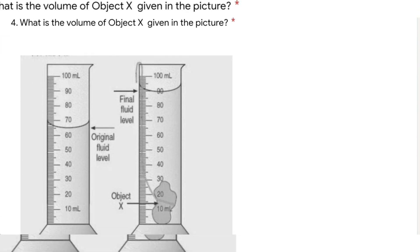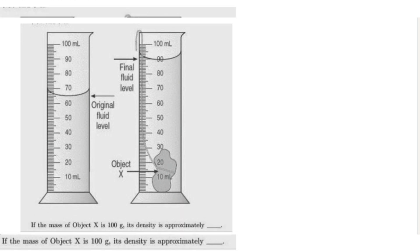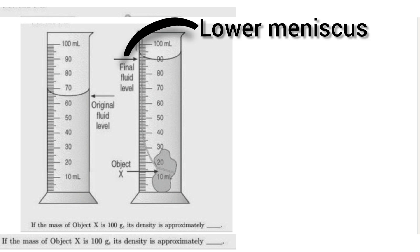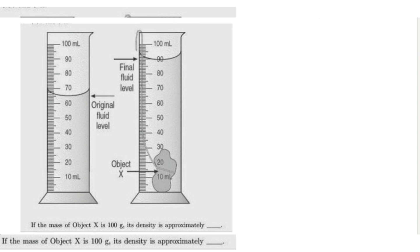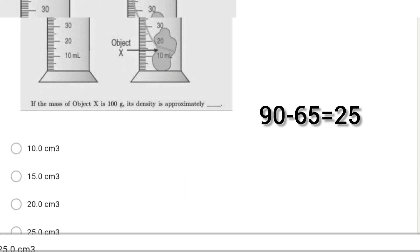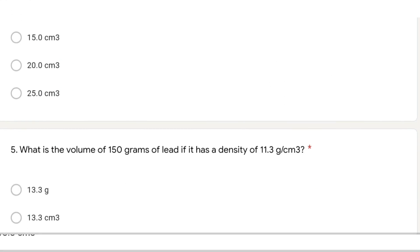In the fourth question, what is the volume of object X given in the picture? If you look at the picture carefully, there is a fluid and object X is an irregular substance. When you put an irregular substance inside the fluid, there will be a rise in water level. To find the volume, we subtract the final fluid level minus the original fluid level, reading the lower meniscus. The values are 90 and 65, so the volume is 90 minus 65 = 25 centimeter cubed.